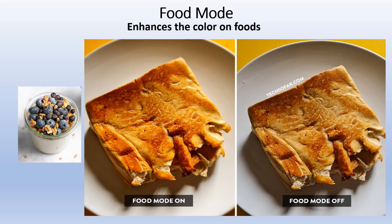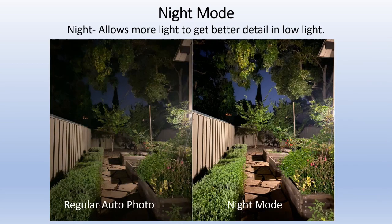Food Mode: the picture on the right with food mode off is just a straight normal picture. The picture on the left with food mode on looks more tasty — it enhances the things you want to see to make the food more appealing. The blueberries on the left are a good example: food mode enhances the food and the rest of the image is shown in a duller tone. Night Mode: without it you get a dim image, but with night mode the camera keeps the shutter open longer, giving you a much brighter, better picture.